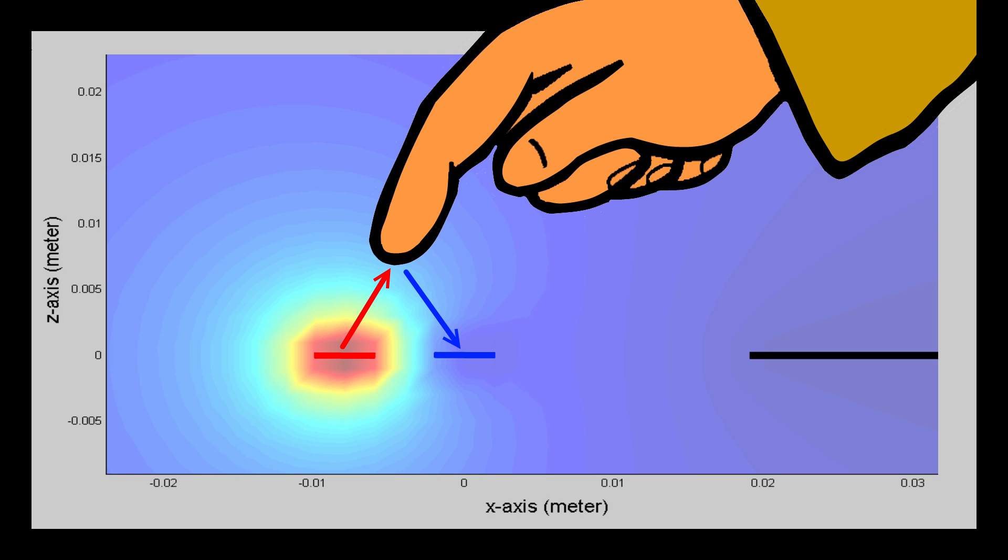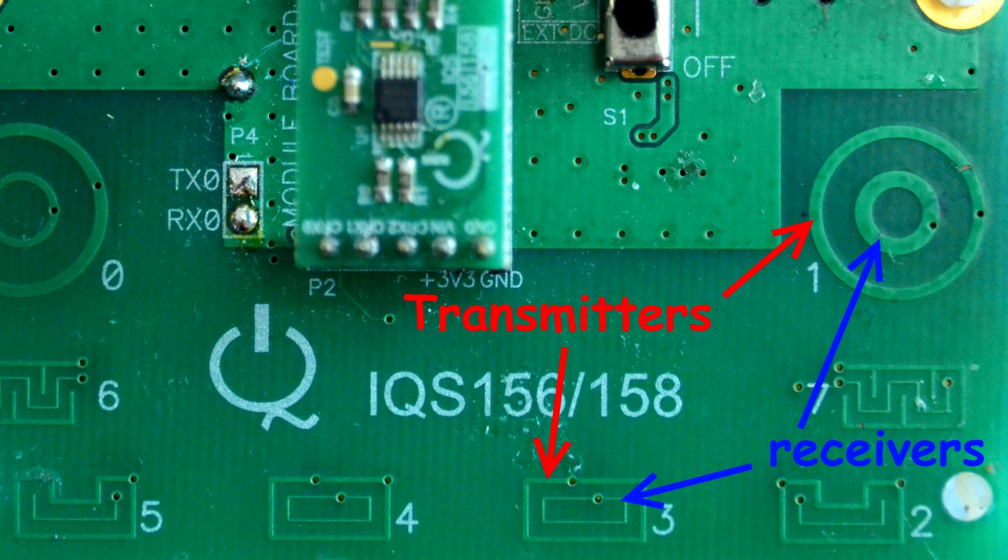The receiver's ability to pick up the reflected signal depends on its size and its distance from the reflector. Very often, it is placed in the center of the transmitter ring.